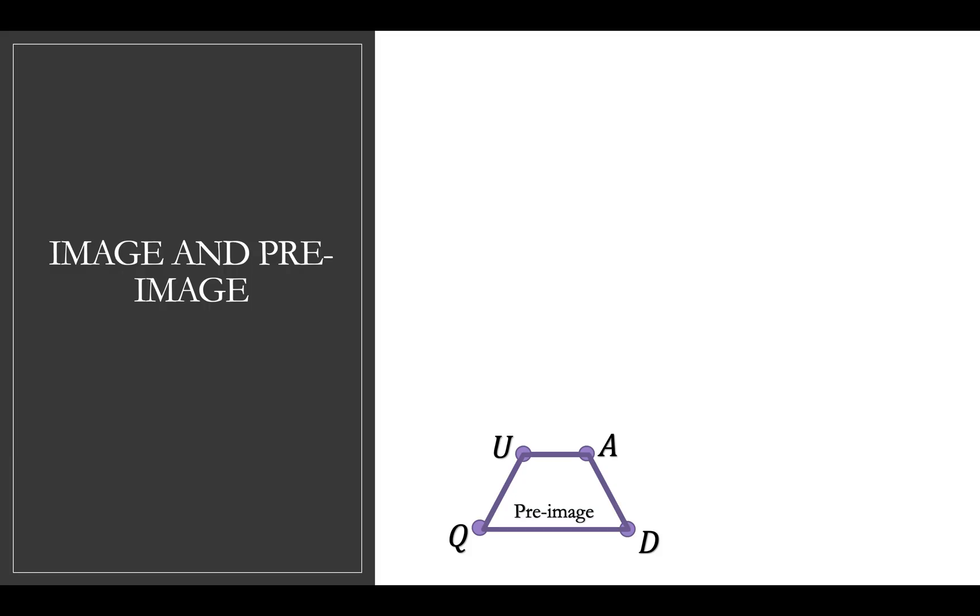So first, we have an original, like I said. Our original in this case is this trapezoid, Q-U-A-D. And we call this, the original, we call this the pre-image. The pre-image is whatever you start with.